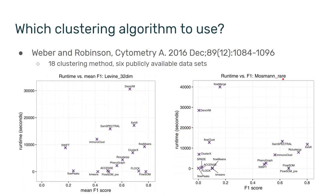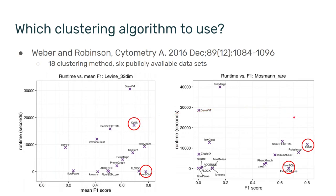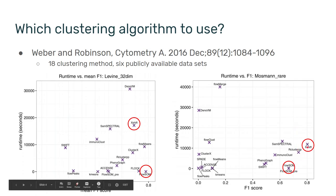Then, looking at the right figure for rare cell subsets, the winner seems to be Xshift. What I would like to point out is that Xshift actually performs pretty well for the Levine immune profiling dataset as well, and that Flowsome has reasonable results for the Mosman dataset. In fact, if you read the conclusions from the paper, they list Flowsome and Xshift as among the better options.